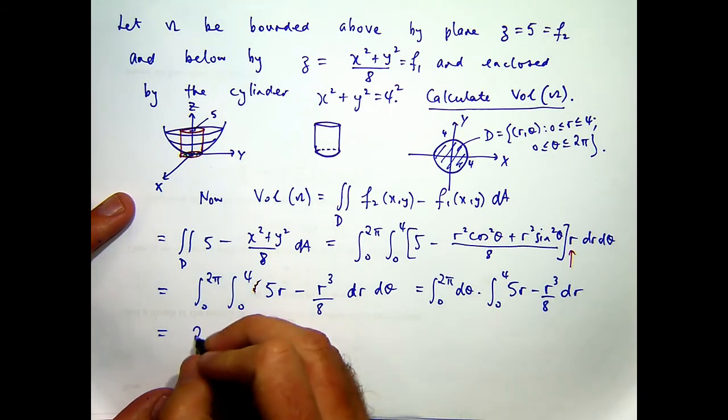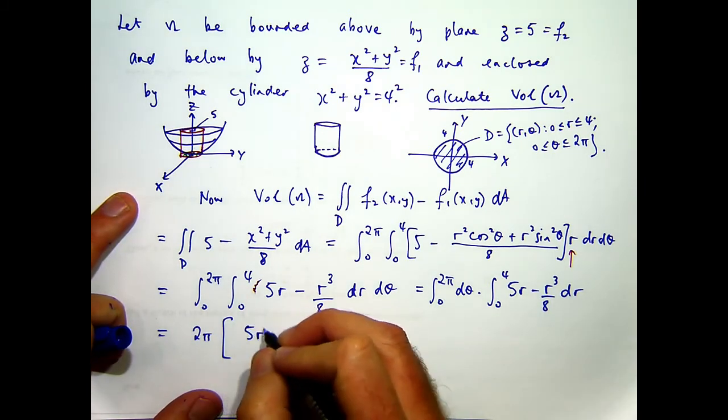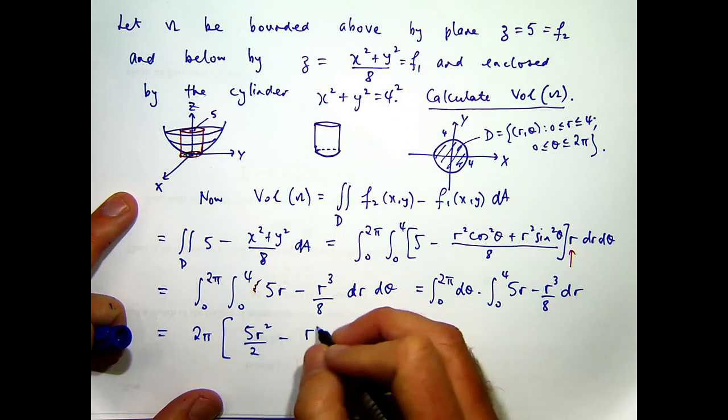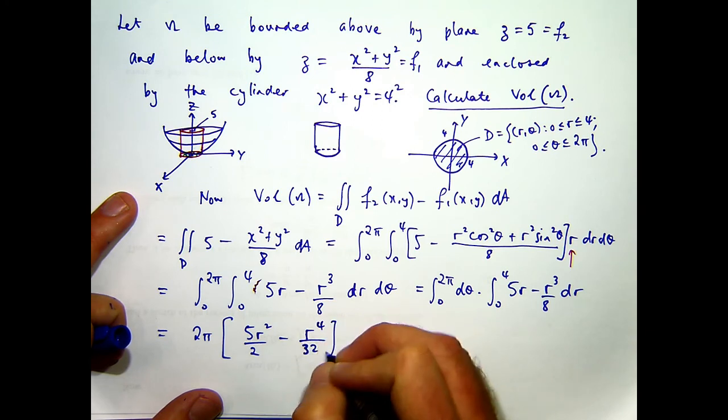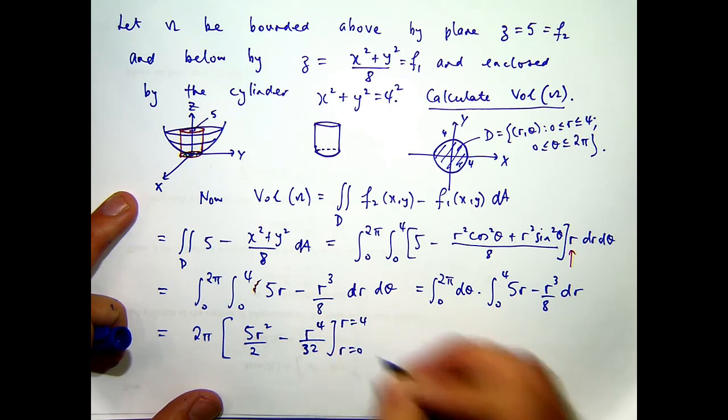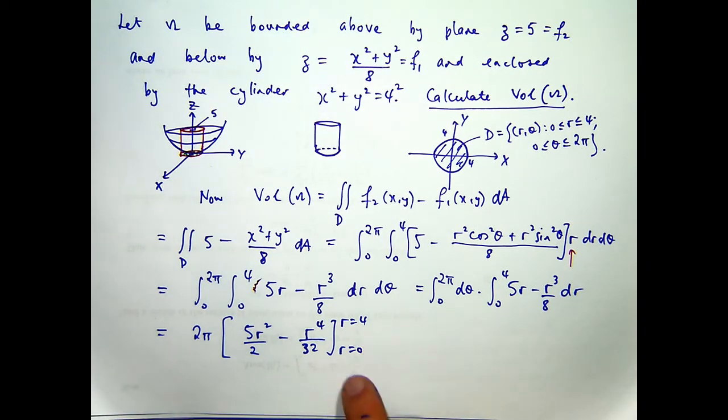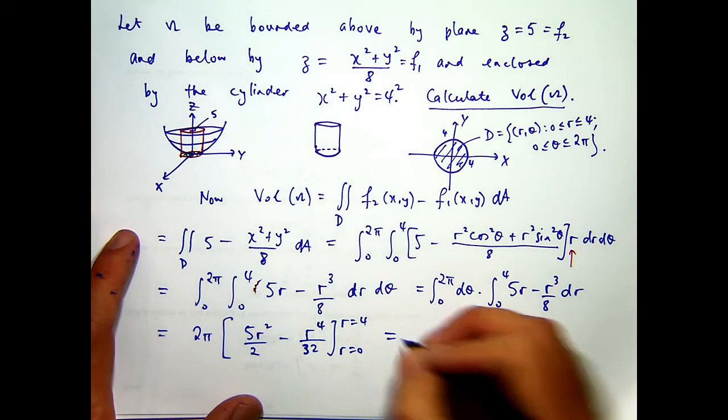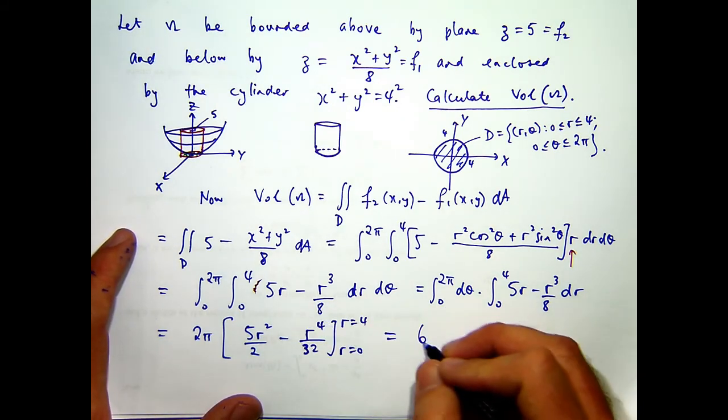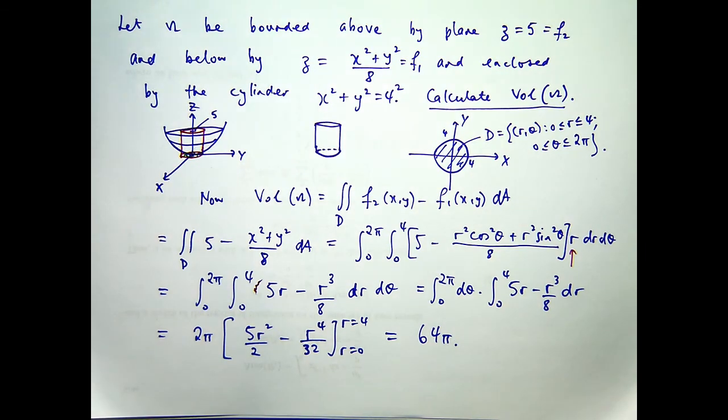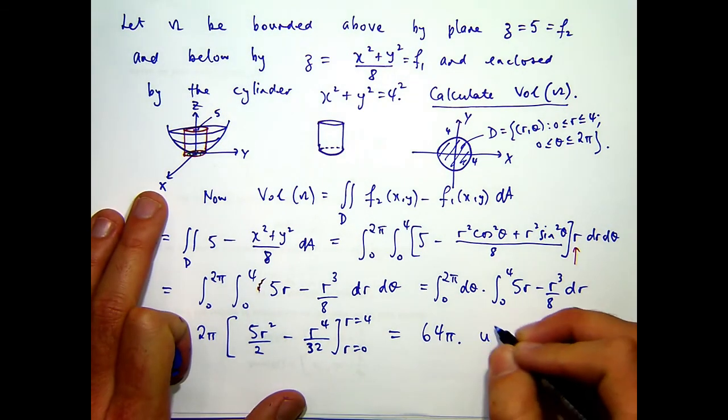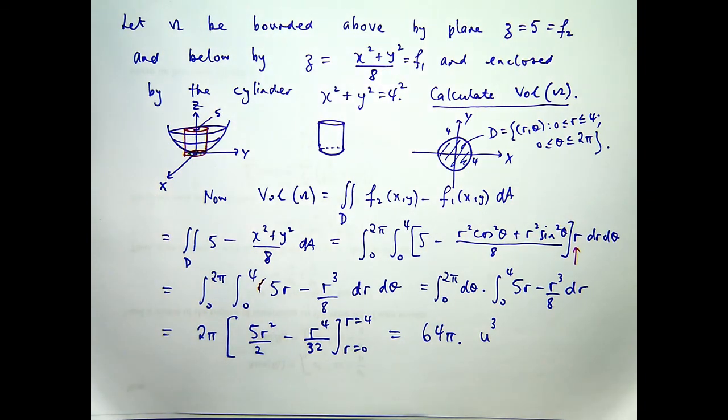So all I need to do now is plug in my r equals 4 and my r equals 0. Obviously, r equals 0 is going to give us 0. So it's just r equals 4 which is the key point. And if I sub those in, I'll get 64pi. Now this is a volume question. So I guess we're looking for some sort of units. They're not specified. So by the u cubed here I guess I could, I mean units cubed or cubic units, however you want to say it.